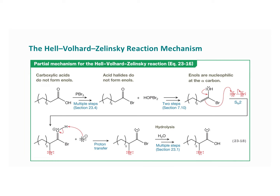One of the neat things about this mechanism is that you already know parts of it, so you can practice this. We start with a carboxylic acid and react with PBr3 — there are multiple steps, which you can refer back to in section 23.4 — and now we have an acid halide.